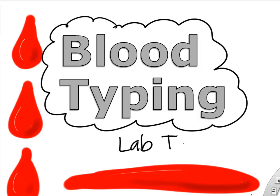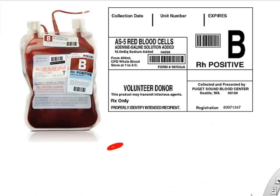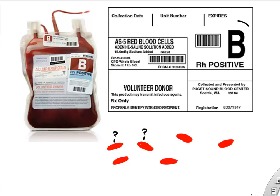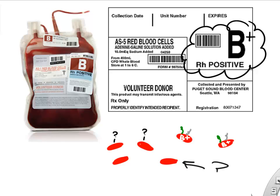In this video, we're going to cover blood typing that we do in the typical lab class. Blood typing is interesting because we can donate blood but we can also receive blood if we need it, and in order to do that, we need to know blood type. In this case, we have B positive blood, which means these red blood cells in this bag make the B marker and the RH marker, so we call it B positive.